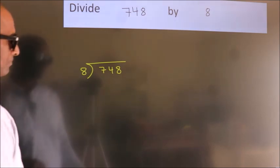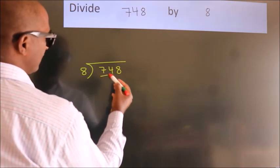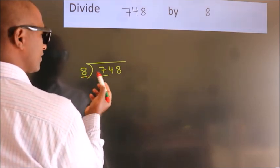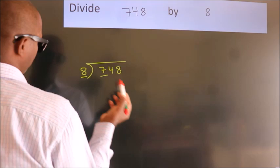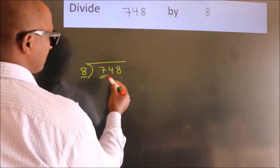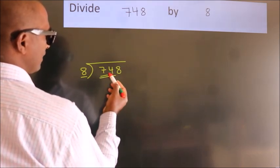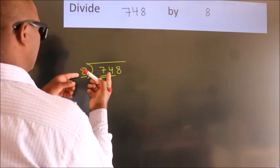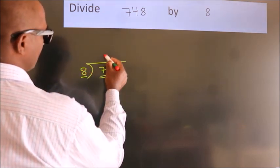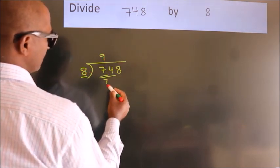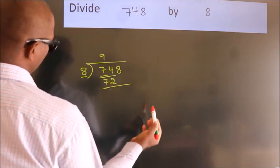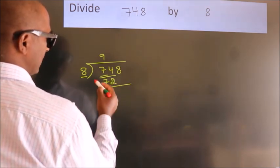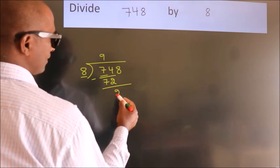Here we have 7, here 8. 7 is smaller than 8, so we should take two numbers: 74. A number close to 74 in the 8 table is 8 nines, 72. Now, we should subtract. We get 2.